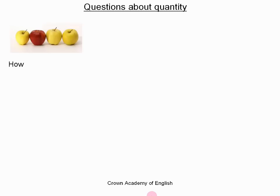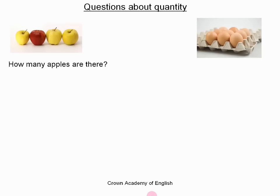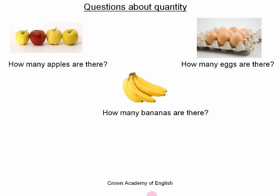Let us look at some questions about quantity. How many apples are there? How many eggs are there? And how many bananas are there? The first thing we can say is that all of these nouns are countable nouns. A countable noun is a noun that is a separate object that we can count. It can exist in the singular or the plural. So if we want to ask a question about quantity using countable nouns, then we use the expression 'how many'.